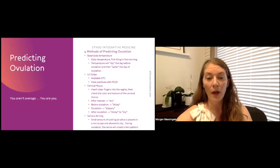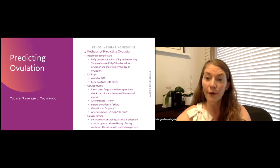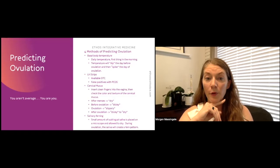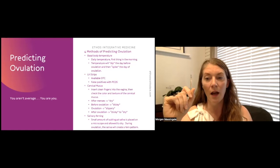Taking your temperature daily first thing in the morning is going to give you that basal temperature of your body. If you go back a few slides, it has that temperature overlay of how that fluctuates through your cycle. Your temperature will have a slight dip the day before you ovulate, and then it will spike the day of ovulation.